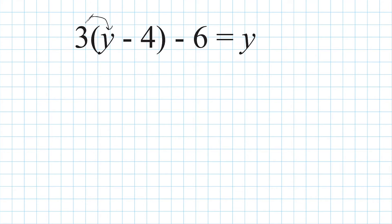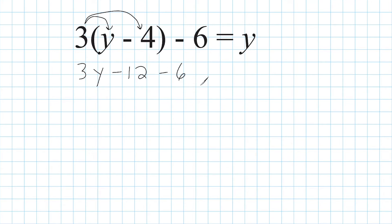We multiply this 3 by each term inside the parentheses. So we have 3 times y which is 3y, and then positive 3 times negative 4 which is negative 12. And then we still have to subtract 6, and this equals y. We can simplify the left-hand side further — we have two like terms, the constants negative 12 and negative 6, which combined give negative 18. So we have 3y minus 18 equals y.